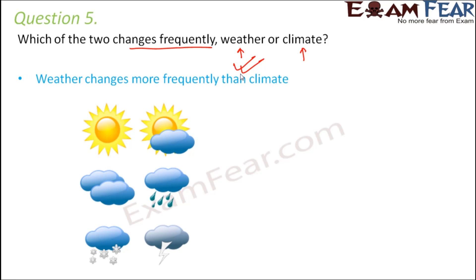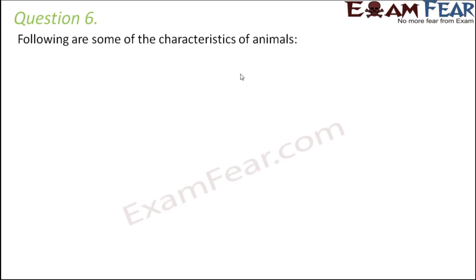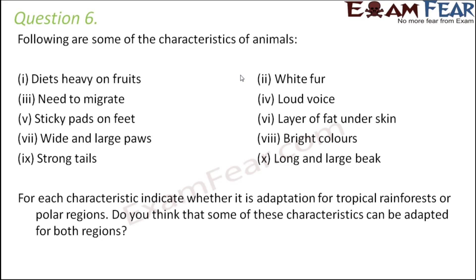Question number six: for each of the following characteristics of animals, indicate whether it is an adaptation for tropical rainforests or polar regions. Before answering, let's note the climates — tropical rainforests are generally hot, whereas polar regions are extremely cold. Knowing the climate, we can decide which features suit which climate.